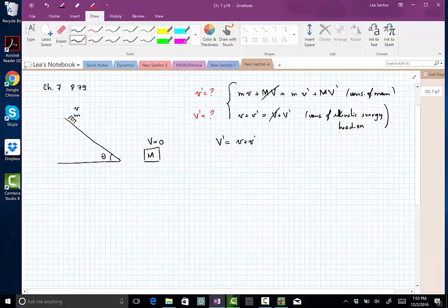and put it into the equation for conservation of momentum. So we have m V small is equal to m V prime small plus big M, and V plus V prime. So from this equation here, we are going to be able to find V prime.